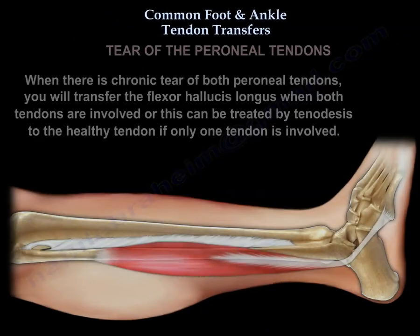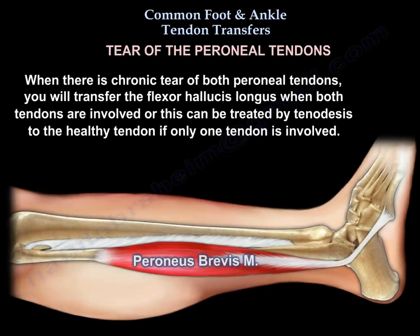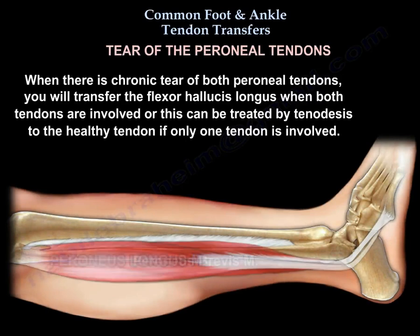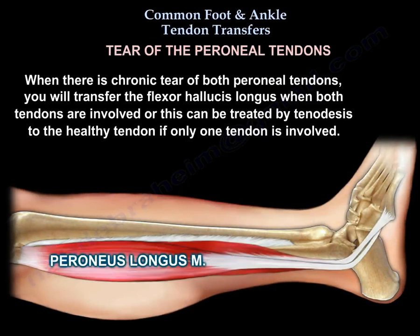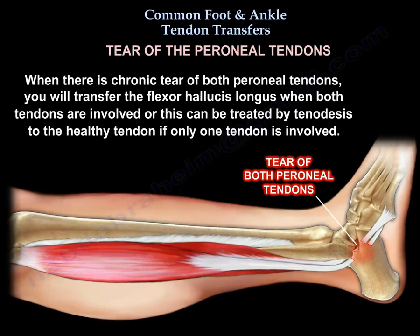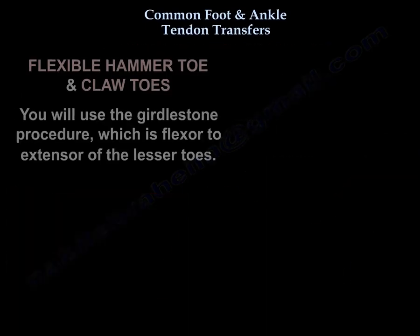For the peroneal tendons, when there is chronic tear of both tendons, you will transfer the Flexor Hallucis Longus when both tendons are involved. Alternatively, you can treat it by tenodesis to the healthy tendon if only one tendon is involved.